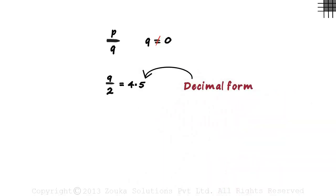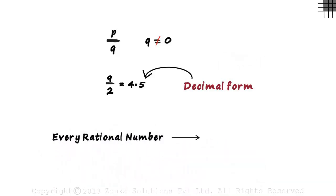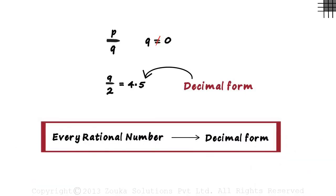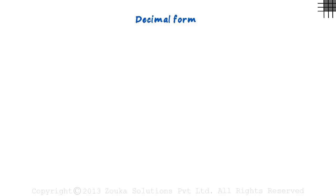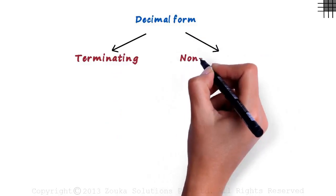Every decimal number can be expressed in a decimal form. This is a very important point. Any rational number can be written in decimal form. But what kind of decimal form can it be written in? Are there different types? Yes, let's look at them. There are two broad categories: terminating decimals and non-terminating decimals.